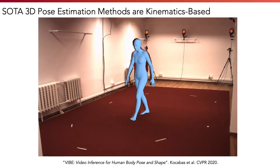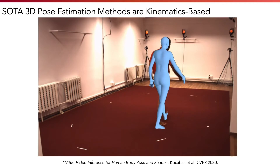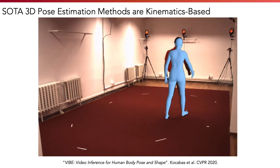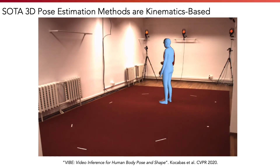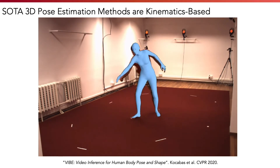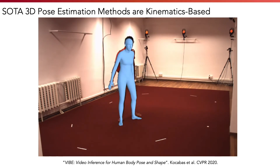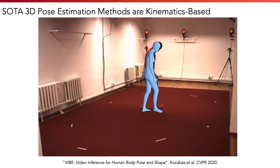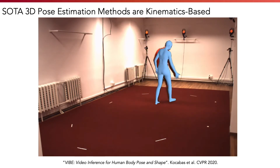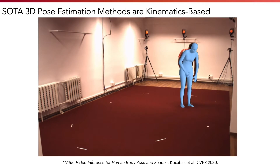Currently, all state-of-the-art 3D human pose estimation methods are kinematics-based, which means they do not model the physical forces underlying the human motion. As a result, the motion they produce can be accurate but physically implausible, with physical artifacts such as foot sliding, jitter, and ground penetration.